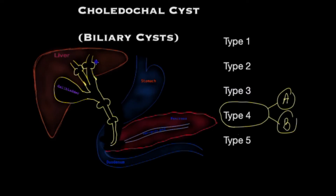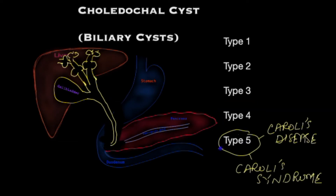A type 4 cyst consists of segmental dilatation of the bile tube inside or outside the liver, and is classified as A and B. In type 4A, both bile tubes inside and outside the liver are involved; in type 4B, only those outside the liver are involved. Finally, type 5 cyst consists entirely of cystic dilatation within the substance of the liver, with two main variants: Caroli's disease, where it consists of dilated cysts, and Caroli's syndrome, where the cysts are associated with fibrosis of the liver.